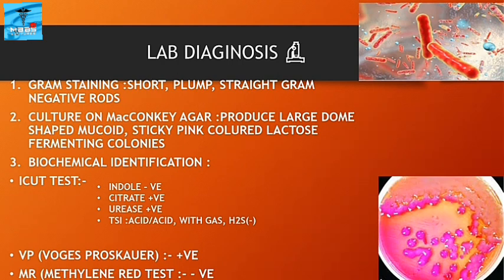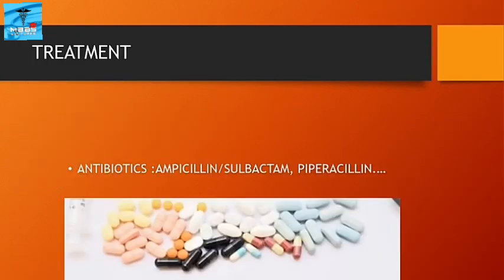Biochemical identification: In the indole test, we get a negative result. In the citrate test, we get a positive result. Urease test is also positive. In TSI (Triple Sugar Iron) agar, we get acid over acid with gas without H₂S production. In the VP (Voges-Proskauer) test, we get a positive result.